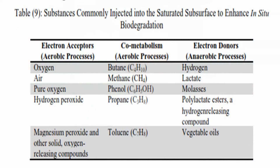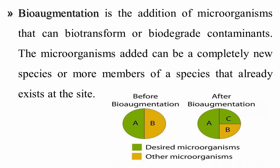Sometimes you need to add nutrients, oxygen, or other substances to facilitate the process for the microbial population. A table summarizes what may be injected in-situ: under aerobic conditions, electron acceptors such as oxygen, air, pure oxygen, hydrogen peroxide, and others; co-metabolites like butane, methane, or phenol; and under anaerobic conditions, electron donors such as hydrogen, lactate, or molasses.